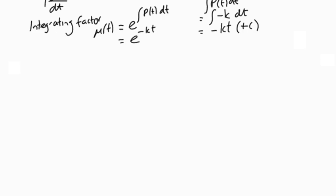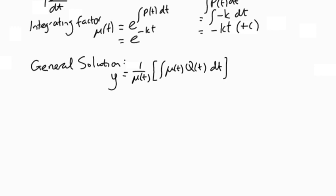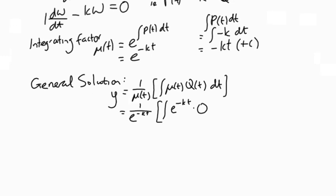So then we've got our general solution. y equals one over μ of t times the integral of μ of t q of t dt. So I've got one over e to the negative kt times the integral of e to the negative kt times zero with respect to t.